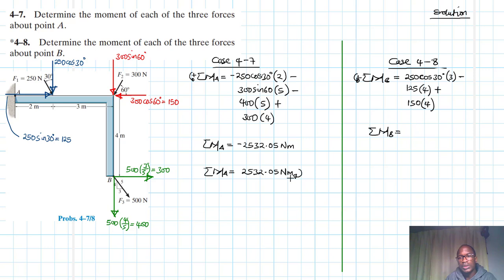Therefore summation of moments about point B is just going to be equal to, grab your calculators, so we have 250 cos 30 by 3 minus 125 by 4 plus 150 by 4. So we have a positive 749.52 newton meters and this one is anti-clockwise, which is this.